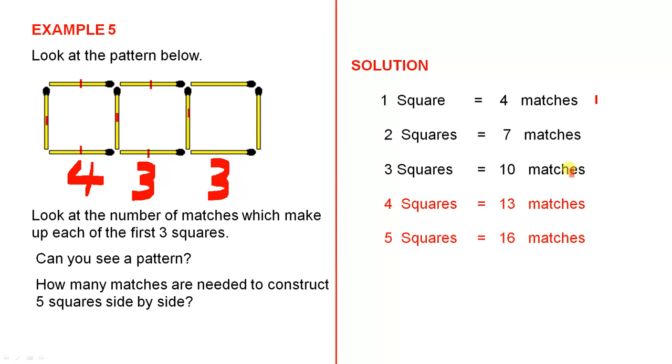In other words, the pattern I see, and I think you see it too, is that for each extra square, you need an extra three matches. So, for four squares, it's ten plus three, which is thirteen, so it makes sense that for five squares, it's thirteen plus three, and the answer is sixteen matches. So, you need sixteen matches for five squares.